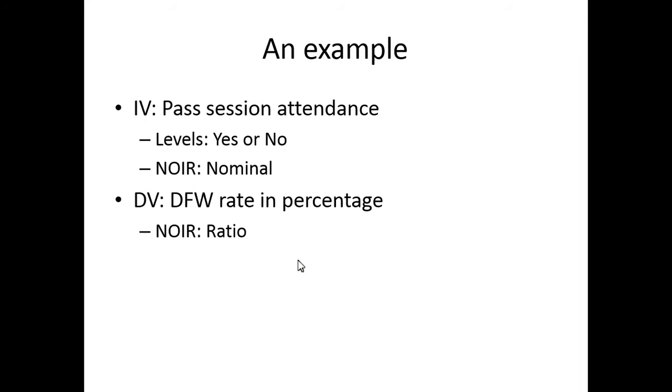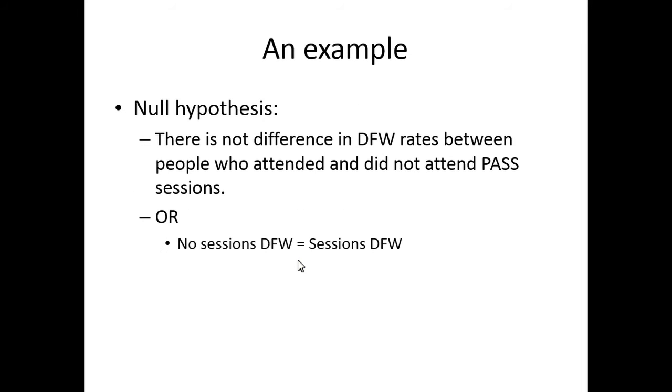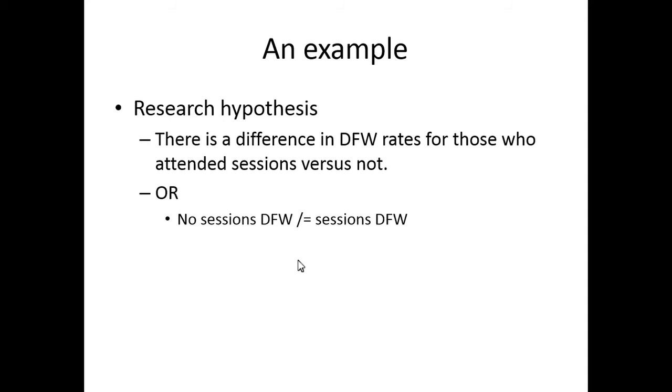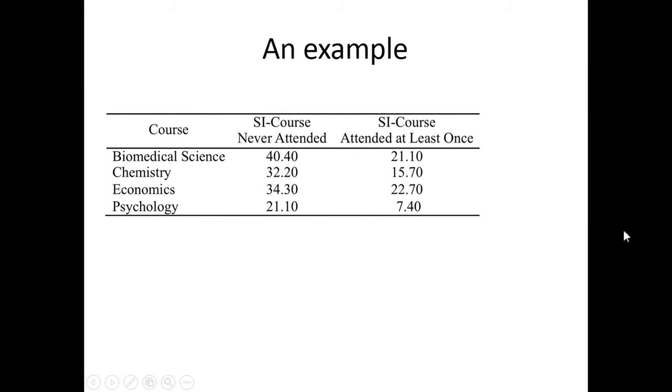I'm going to set this up as a null hypothesis test. I would say there's no difference, so this is the null. It says nothing happened in DFW rates, PASS doesn't work, nothing happened, people still fail at the same rate. You can write them like this: no sessions equal to sessions. But you'll see it has the IV and the DV in it. Between the two IV groups, there's no change in the DV. A research hypothesis says there is a difference, something happened. I didn't predict a direction, I just said something's going to happen, we'll see. I can write that as not equal to.